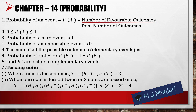Next we have Chapter 14: Probability. P(A) = number of favorable outcomes ÷ total number of outcomes. Probability is always between 0 and 1. Probability of a sure event = 1. Probability of an impossible event = 0. The sum of all possible outcomes = 1. P(not E) = P(E') = 1 − P(E), where E and E' are called complementary events.